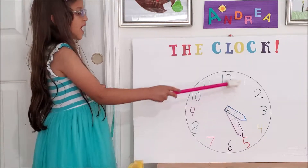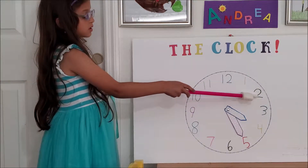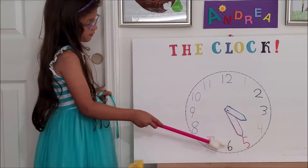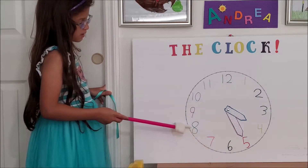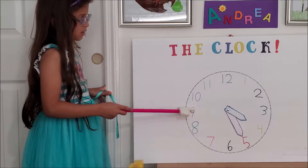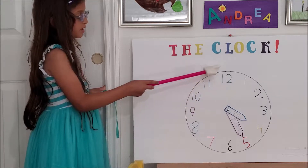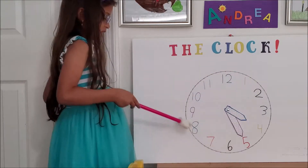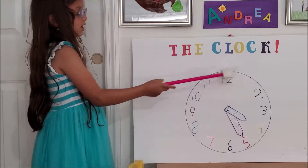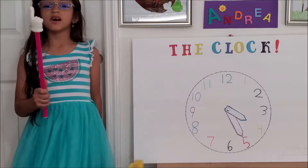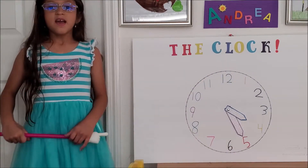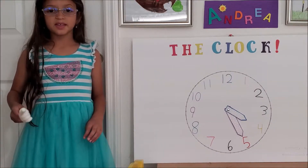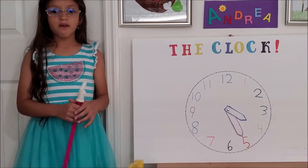These are the hours: 1, 2, 3, 4, 5, 6, 7, 8, 9, 10, 11, and 12. And all these dots circling around the clock each equal 1 minute. That describes the 60 minutes and the 12 hours.